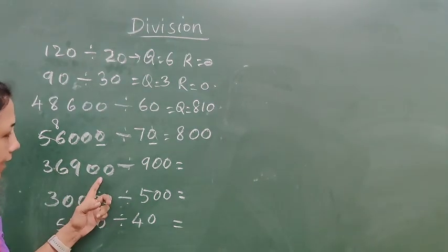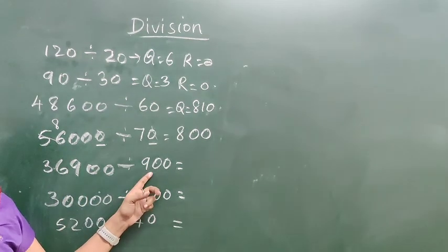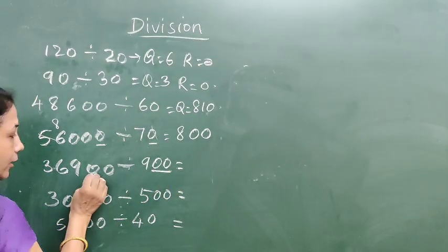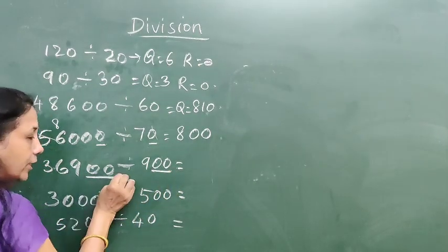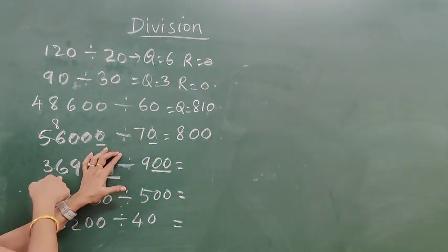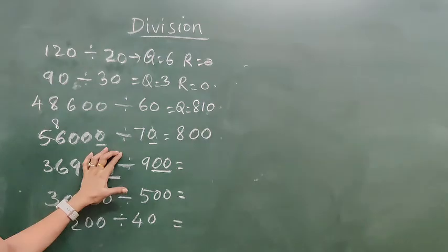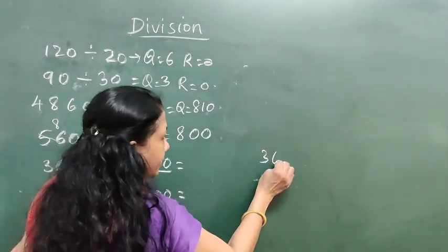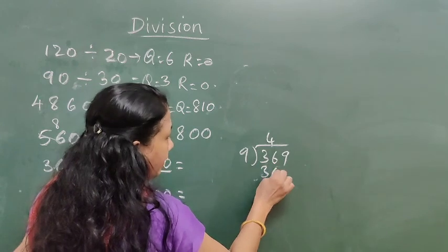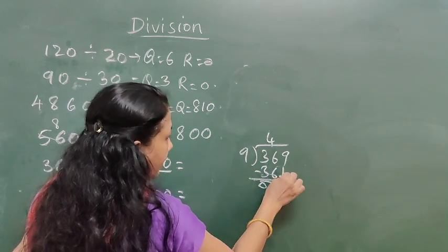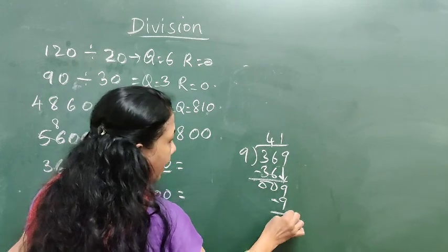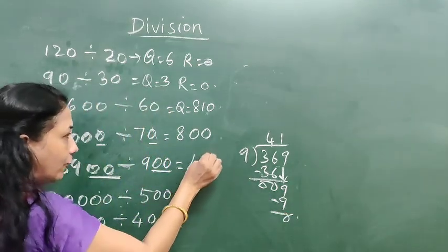Next: 36,900 divided by 900. How many 0s are there in 900? Two 0s. Remove those 2 zeros from both numbers. Then we have 369 divided by 9. We get 9 fours are 36, then 9 ones are 9, so the answer is 41.